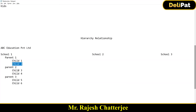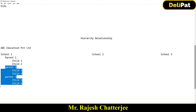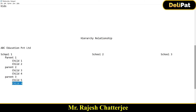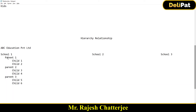This is what comes with the standard hierarchy relationship on the Account object. I've created School 1, under it Parent 1 with Child 1 and Child 2, then Parent 2 under School 1 with Child 3 and Child 4, and Parent 3 with Child 5 and Child 6. The full hierarchy has been set up.